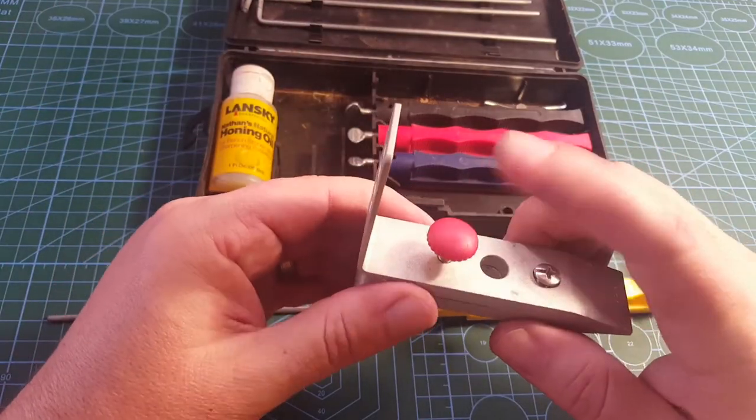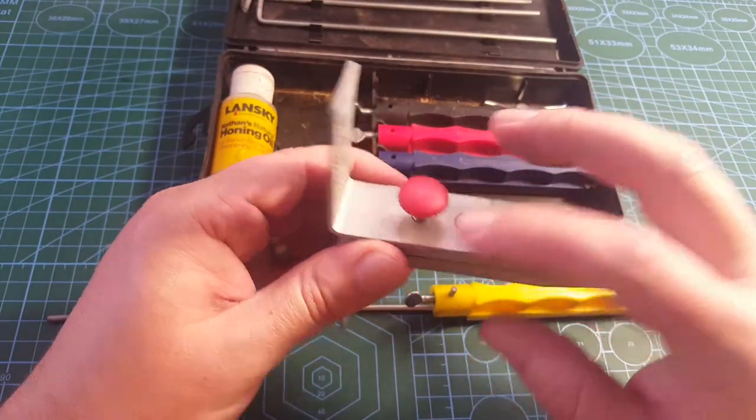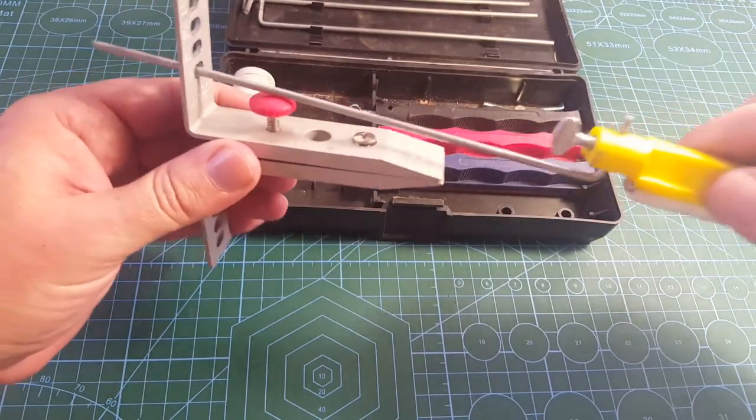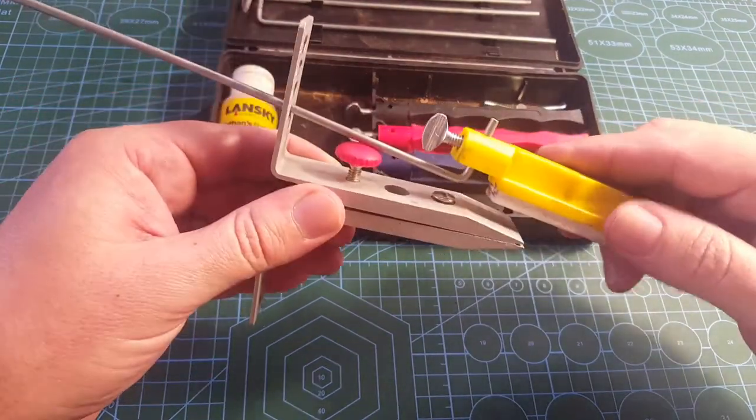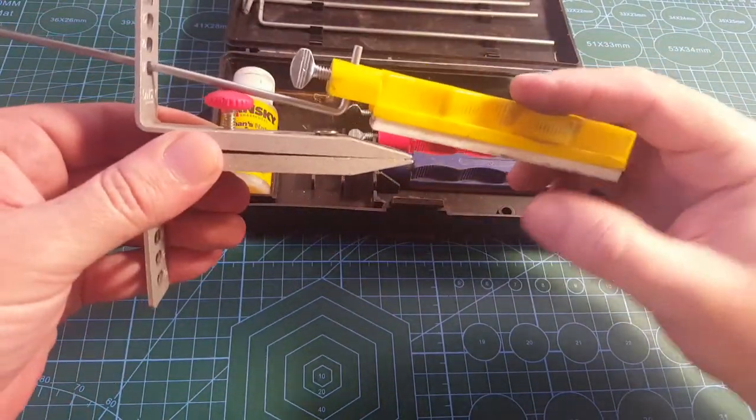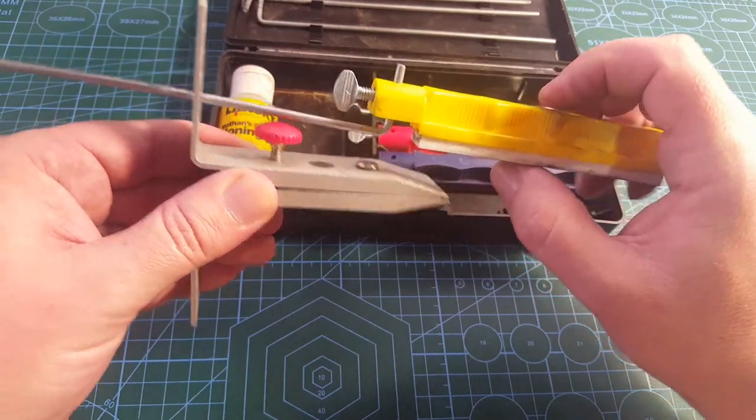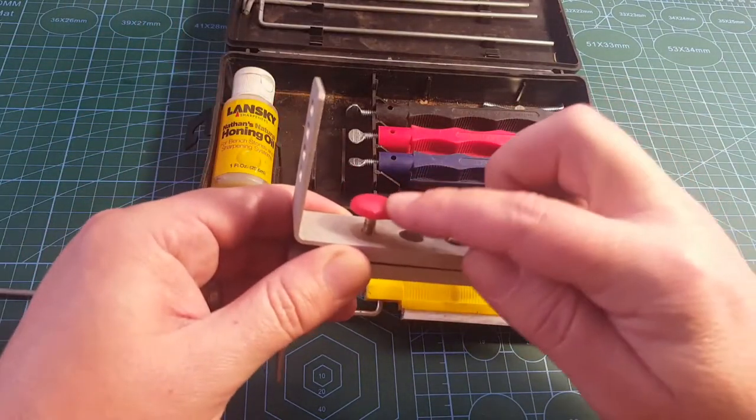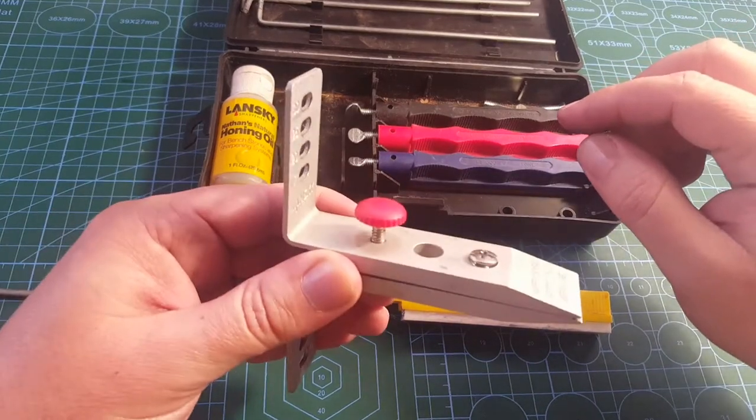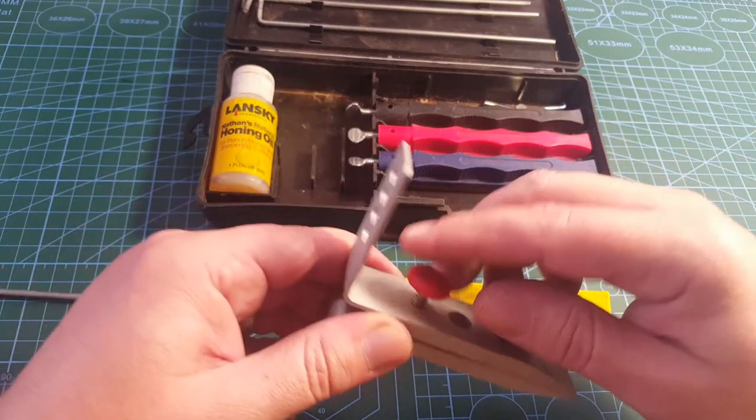Sometimes this thing will get in the way. Just take another screw and screw it in there. Especially if you're doing a 17 degree on a small knife. So can you see where it will land? So if the knife is not that broad, put another screw in there. Something that doesn't stand that tall.